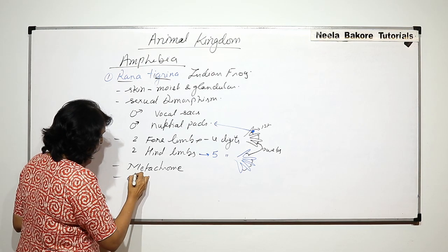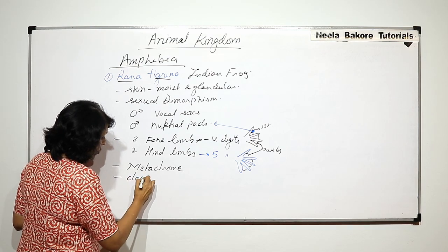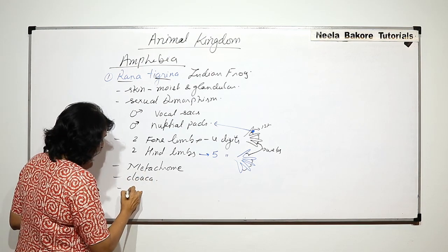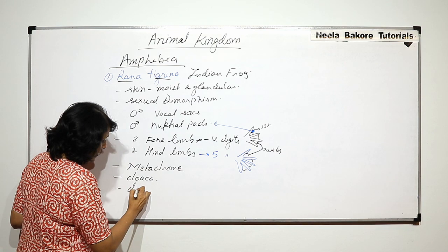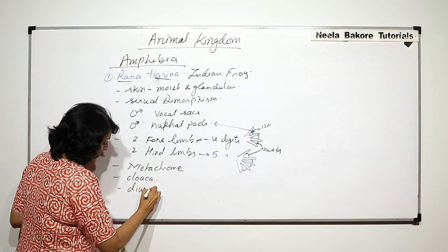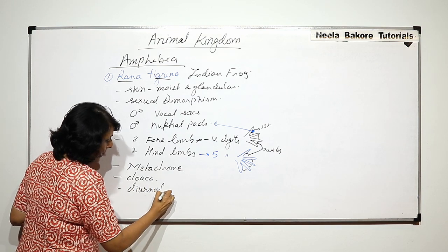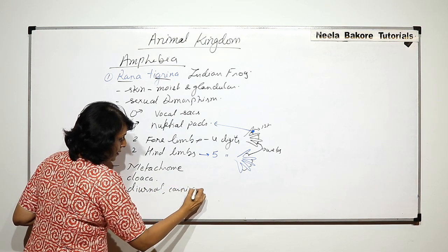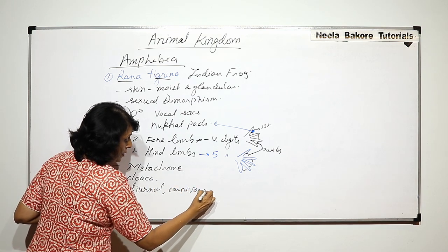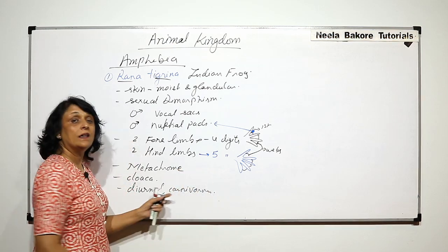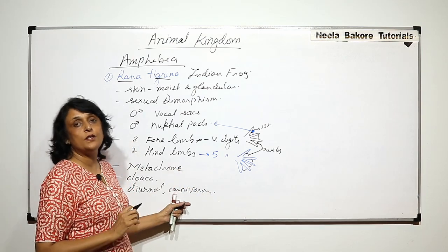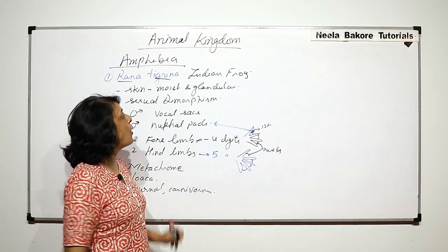Other features that frogs have include a cloaca, and they are diurnal and carnivorous. These are some unique features of frogs.